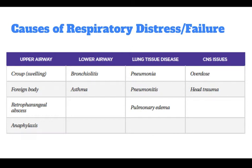Respiratory distress or failure generally falls into one of four broad categories: upper airway, lower airway, lung tissue disease, and central nervous system issues. The list is not comprehensive, and specific conditions should be addressed with specific therapy. These represent the most common causes of respiratory distress or failure in a pediatric population.